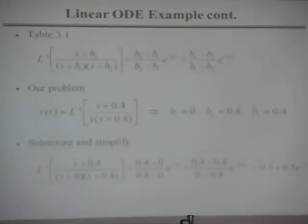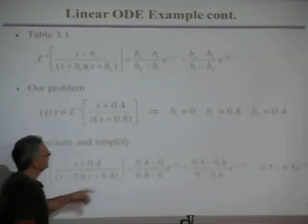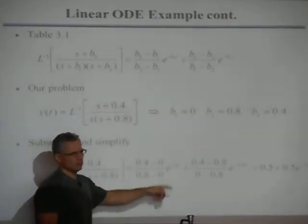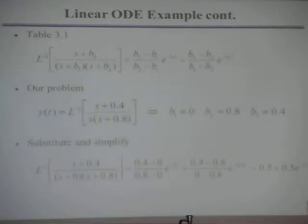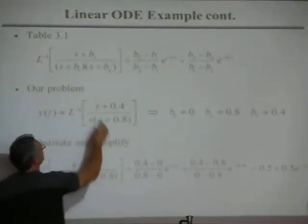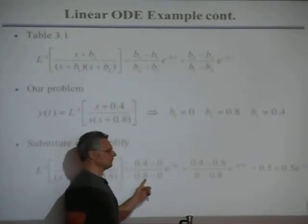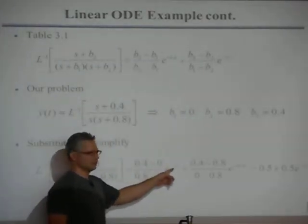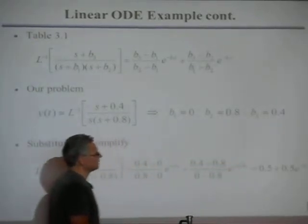Now that I know the three B values, I can use the table formula and plug them in to get the answer. The result involves two exponential terms. The coefficient evaluates to one-half, and e to the minus zero is 1, so I get 0.5 there. The other term also evaluates to 0.5.